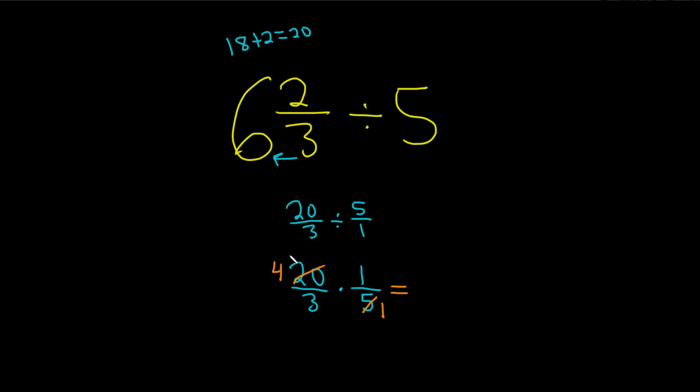And then to finish, you just multiply straight across. 4 times 1 is 4, over 3 times 1 is 3. And that would be the final answer.